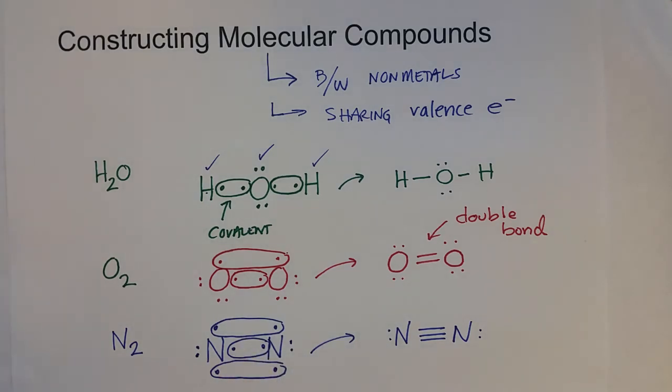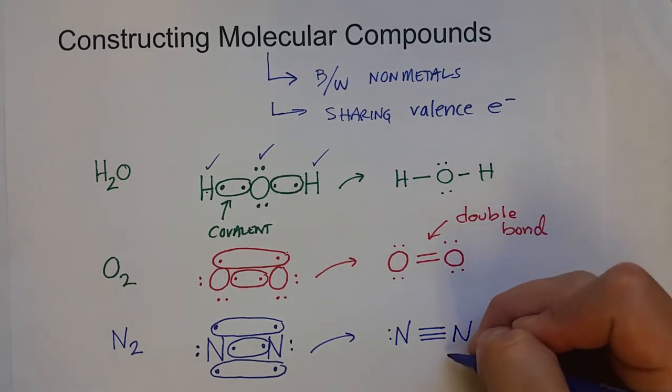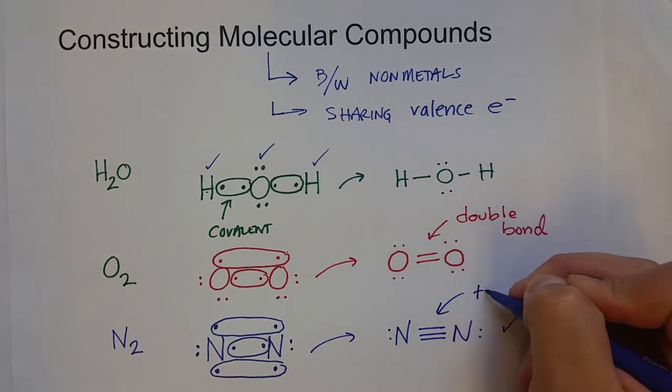Since all of these shared electrons count for both atoms, we can count one, two, three, four, five, six, seven, eight valence electrons for each atom. So we get the octet rule, and that is a covalent triple bond.